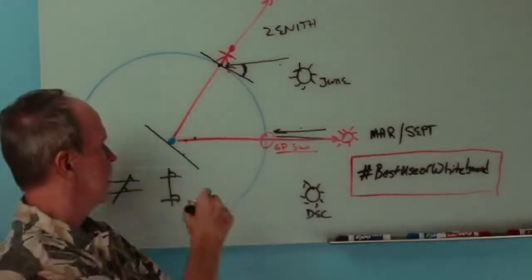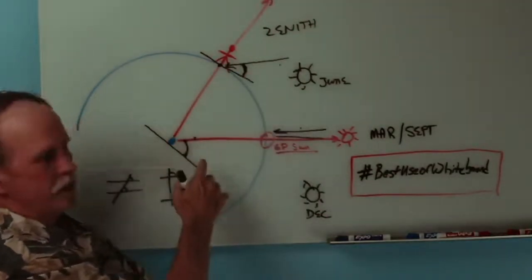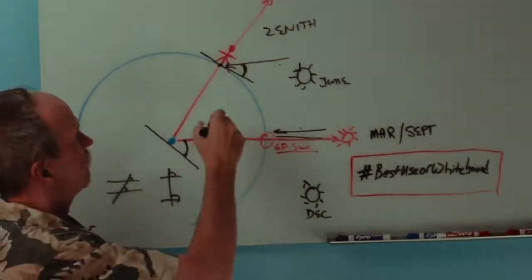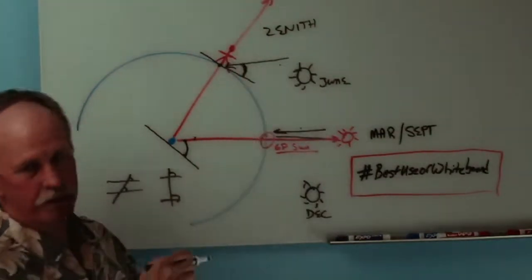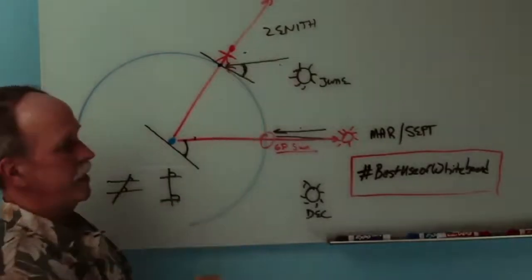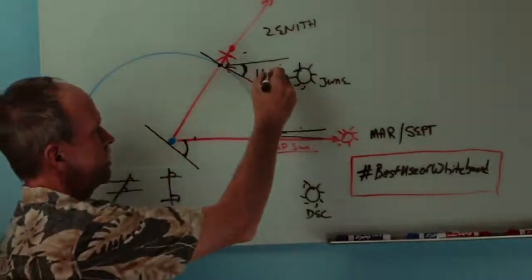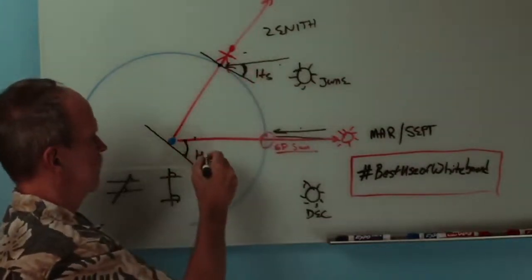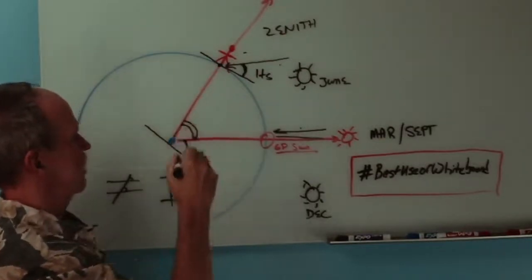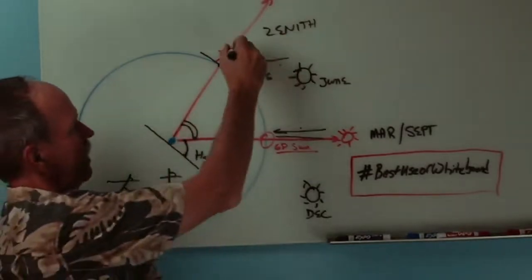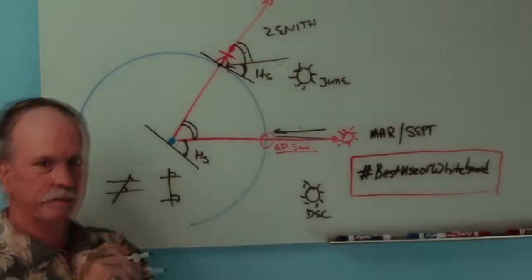So where's that angle down here? Well, it's right here. These are exactly the same angle. Now, this is a 90 degree angle to our horizontal line. So what is this angle right here? Well, it's 90 degrees minus Hs, which is the angle we measure from our sextant. If we subtract that from 90, we get that angle right there, and that would be that angle right there. That determines our latitude.